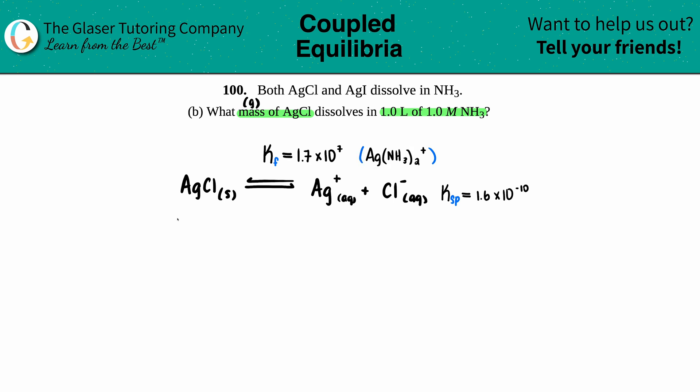I knew it was Ag(NH3)2+ because that was the only one in the back of the textbook with Ag and NH3. Let's write that balanced equation. Remember Kf means I'm forming this compound, so the two individual parts are on the left side: Ag+ aqueous plus ammonia NH3.